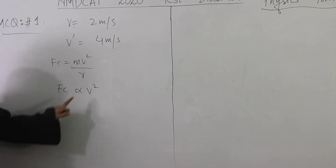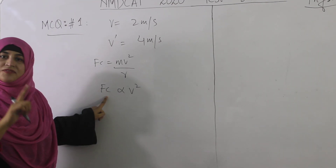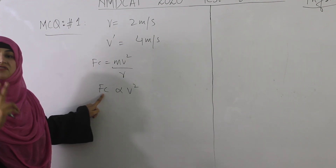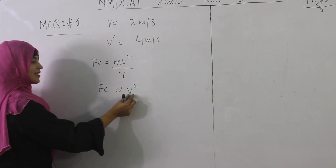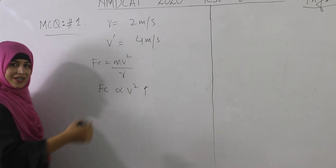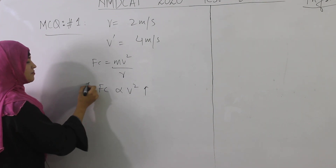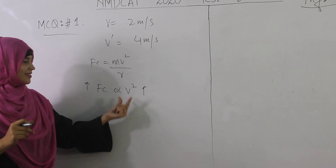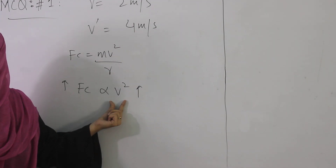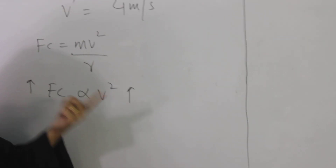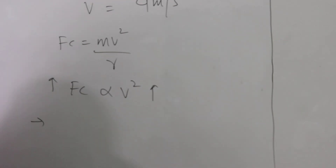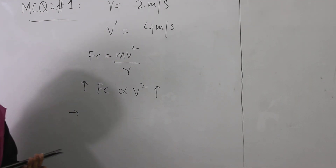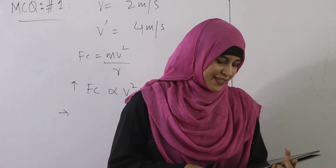Since centripetal force is directly proportional to v², if v changes by a single factor, the centripetal force changes by double that. If v doubles, the centripetal force increases by four times. So when velocity is doubled, centripetal force becomes four times — because it is directly proportional to v squared. Therefore option C is the correct answer: four times.